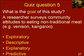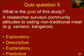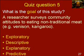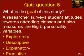Quiz question five: what is the goal of this study? A researcher surveys community attitudes to eating non-traditional meat. The researcher seems to be looking for community attitudes and is not really testing any theory, but they do have a fairly precise objective. So it's probably a descriptive study — they're trying to describe community attitudes, whether they are positive or negative towards non-traditional meat, and perhaps identify differences in attitudes towards different types of meat.